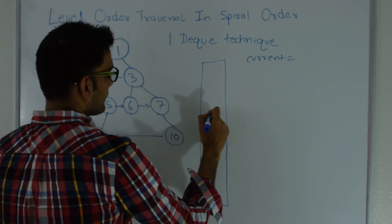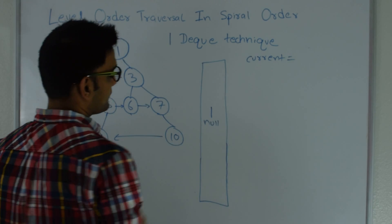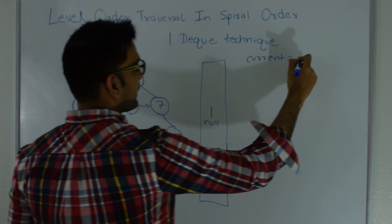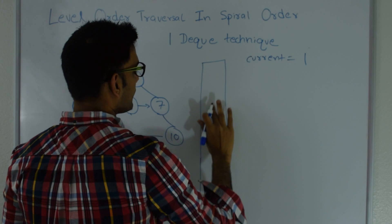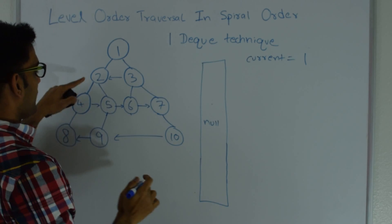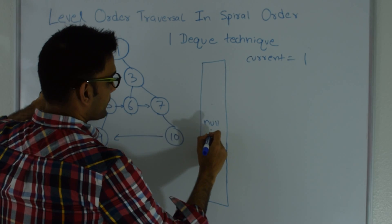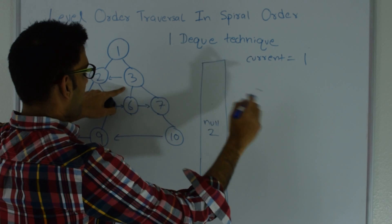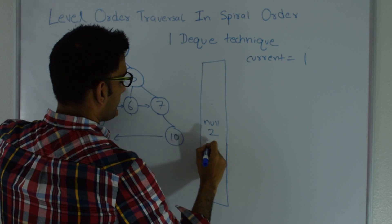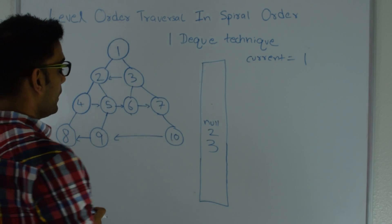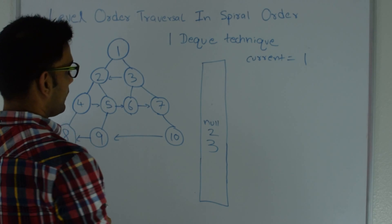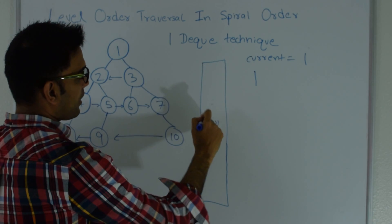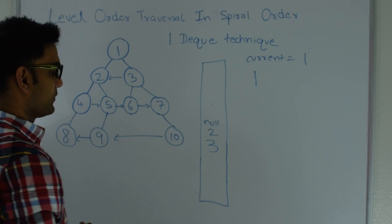I put 1 at the top of the queue and pop from the top — current becomes 1. If 1 has a left child I add it at the bottom of the queue, and if 1 has a right child I add it at the bottom of the queue as well. Then I print 1. As soon as I hit a null from the top, I start reading from the other side of the queue.